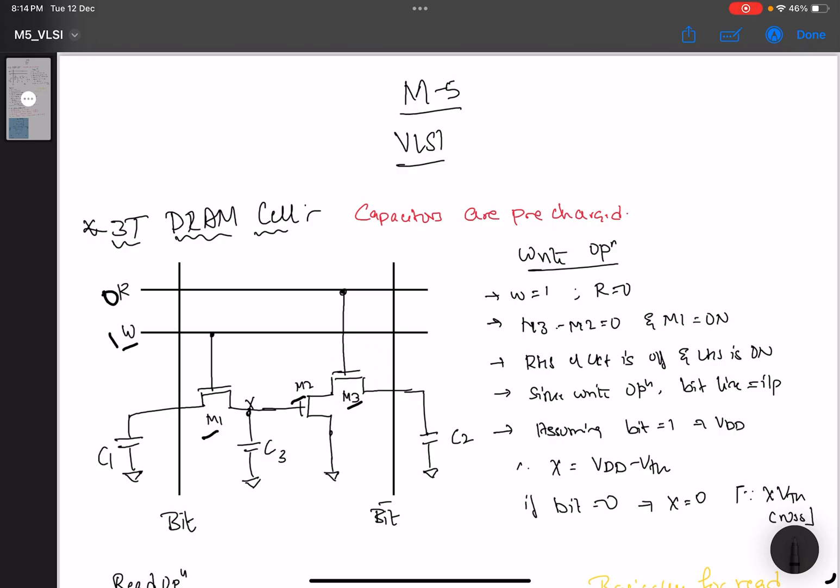M2 and M3 are connected. Therefore, M2 and M3 are 0 and M1 is on basically. So that implies the RHS of the circuit is off. This part is off and this part is on now.